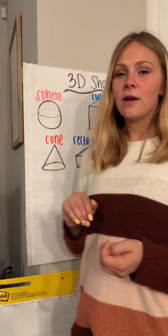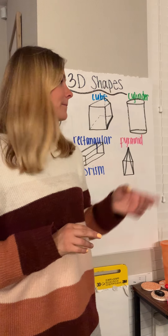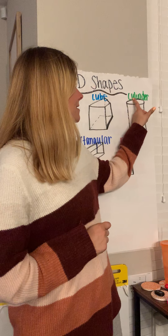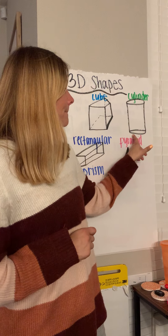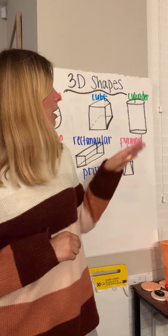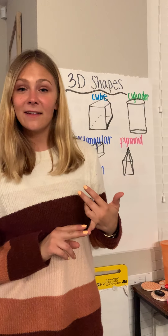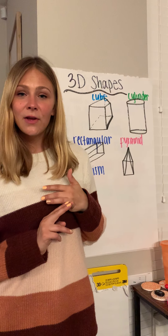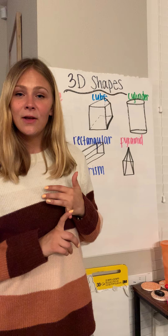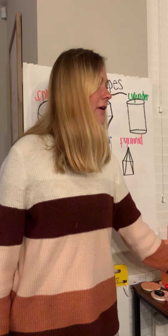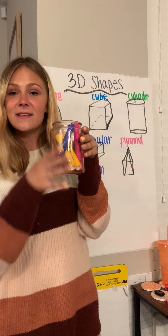Our next one is one that you see probably in your kitchen a lot — this is called a cylinder. I can see some 2D circles, but when we have our 3D shape it's called a cylinder. You see cylinders as cans: cans of fruit, cans of vegetables, soda cans. I can look right here and I have my cup, which is a cylinder. Jars are also cylinders.